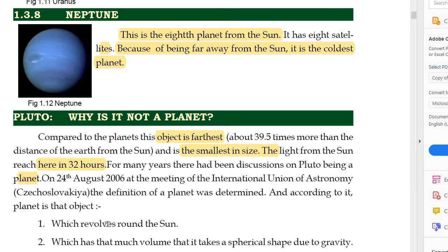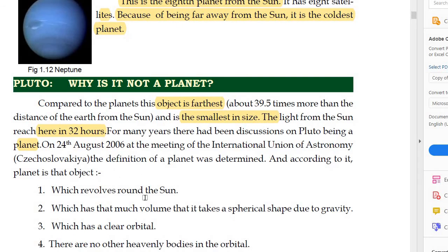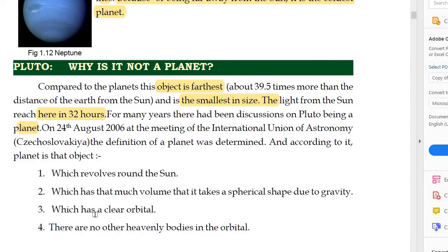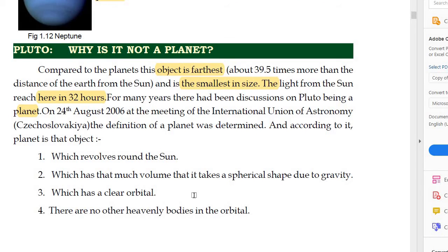At that conference, a standard was set for what qualifies as a planet. According to those criteria, a planet must: revolve around the sun; have sufficient volume that it takes a spherical shape due to gravity; and have a clear orbital — meaning when it revolves around the sun, it moves in a particular circular orbit with no other heavenly bodies in that orbital.